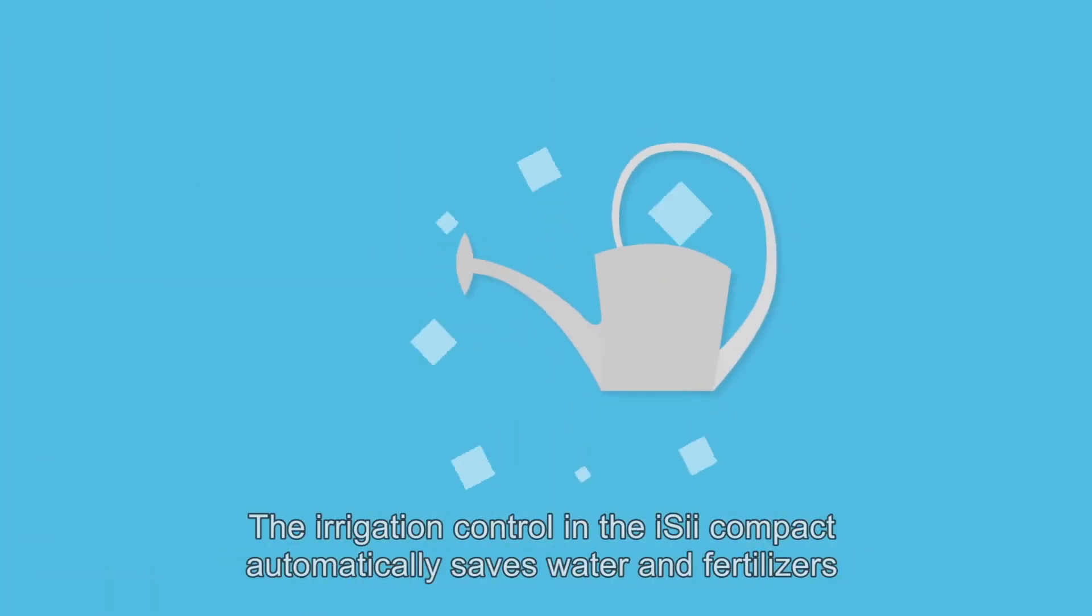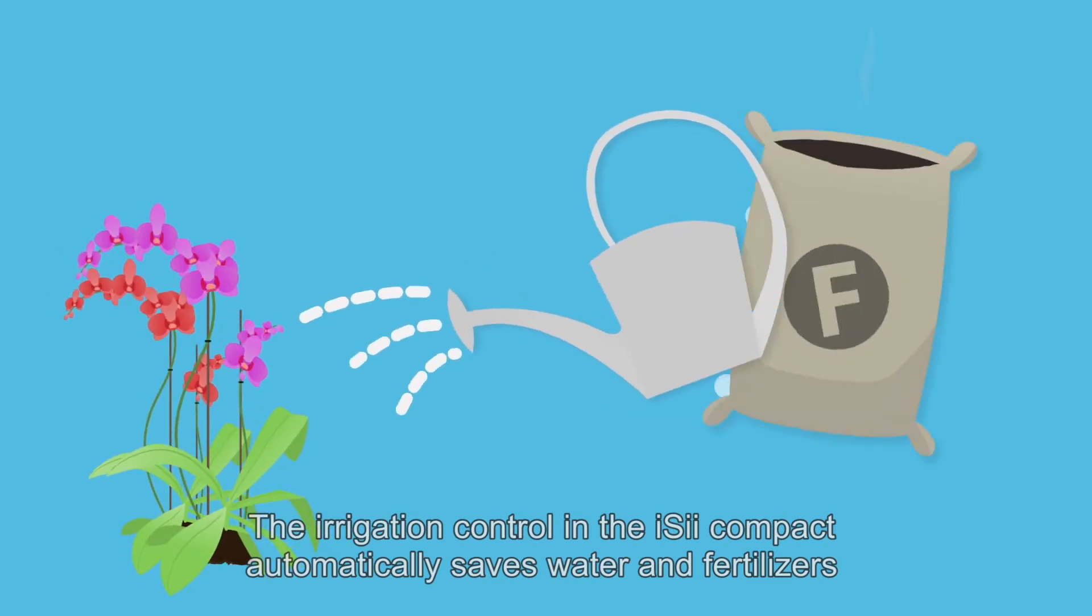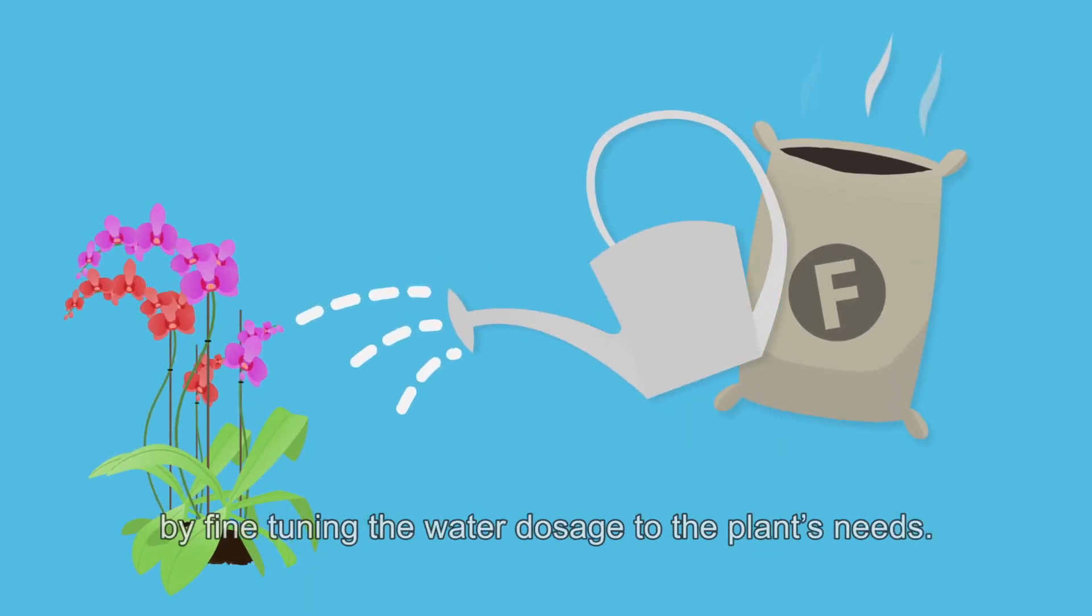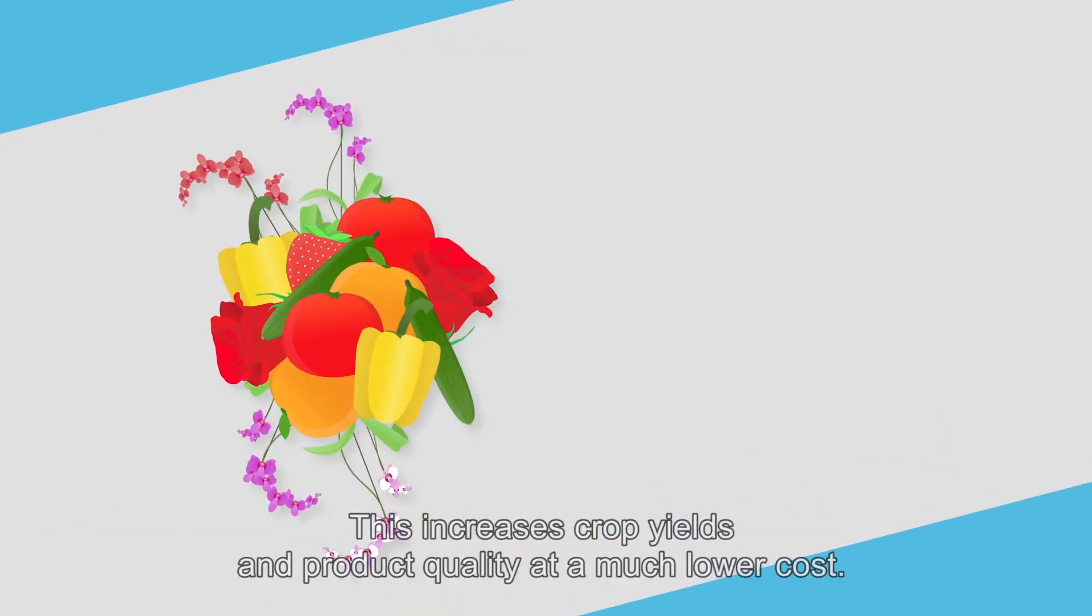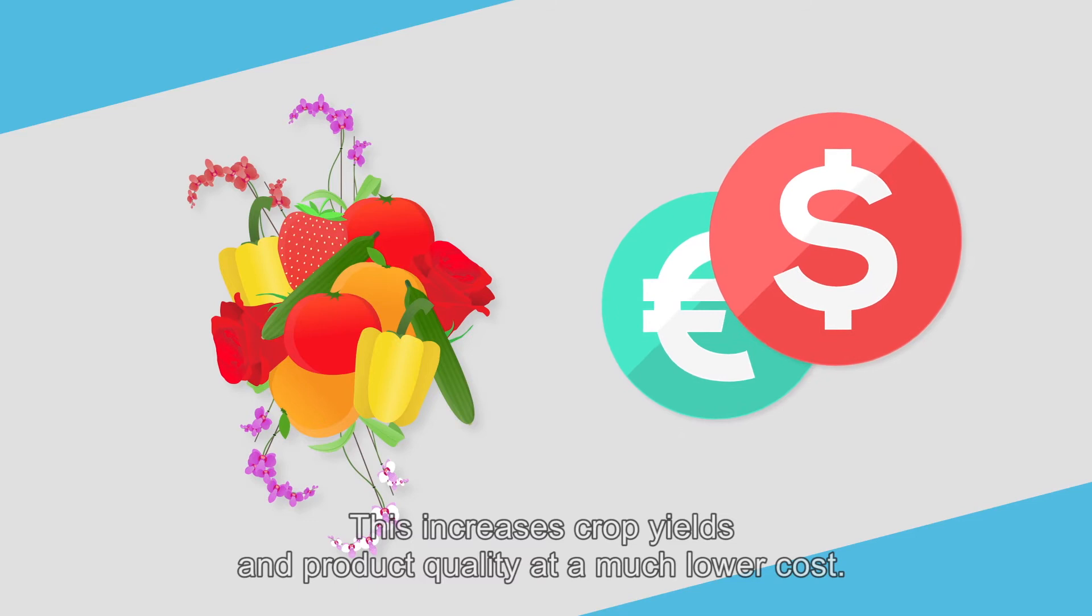The irrigation control in the Easy Compact automatically saves water and fertilisers by fine-tuning the water dosage to the plant's needs. This increases crop yields and product quality at a much lower cost.